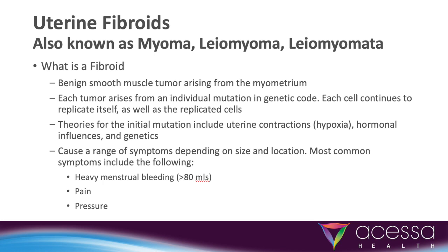Fibroids are known by many names. They are the most common pelvic tumor in women. The exact cause of uterine fibroids is unclear. When symptomatic, they can affect a woman's quality of life. Common complaints include heavy bleeding, pain, and pressure symptoms.